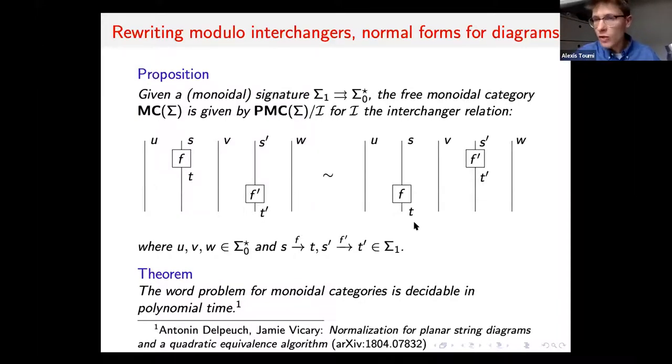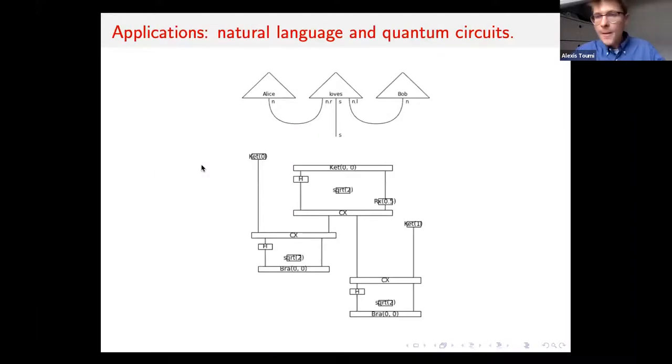As a side note, if you stay with free pre-monoidal categories without the interchanger, this can be useful to model side effects. If this box F has a side effect, then performing it before or after F prime is going to have different semantics. The state monad is pre-monoidal, not monoidal. Now let's get to applications.